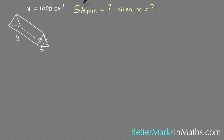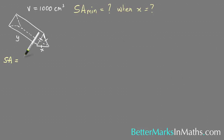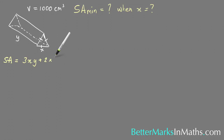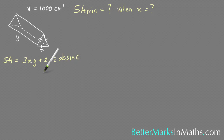The surface area is equal to the two ends added together with the three rectangular sides. Starting with the rectangular sides, the dimensions are y by x, so there are three of them giving 3xy, plus two ends, each calculated using the formula: 2 multiplied by one-half ab sine C.